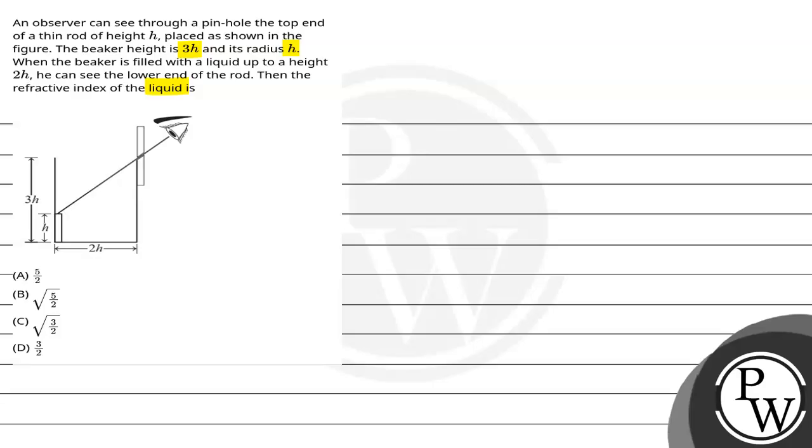So key concept here is Snell's law. According to Snell's law, mu1 times sin i is equal to mu2 times sin r. Now let's move on to the question.